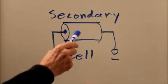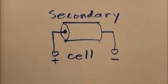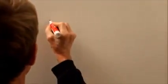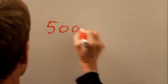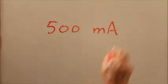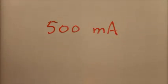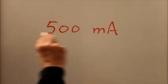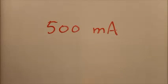We charge this cell up to its full capacity and then connect it into a circuit or a load or a device that draws a continuous current of 500 milliamps. We run that thing for 12 hours and it draws 500 milliamps for the whole time and then the cell suddenly dies.